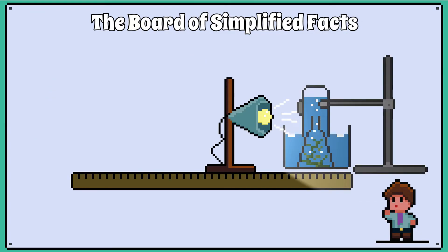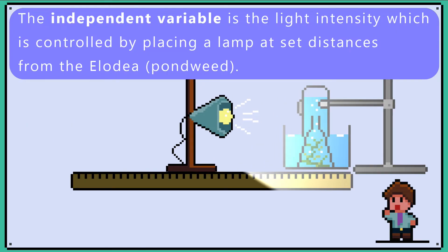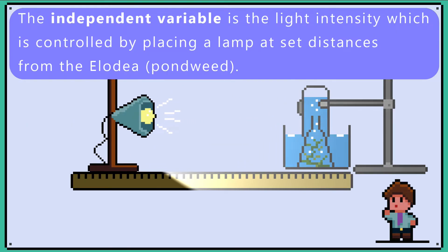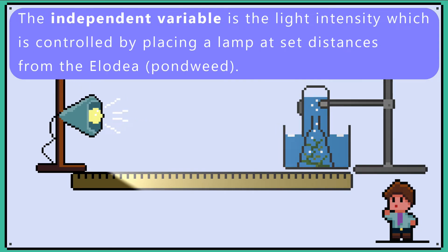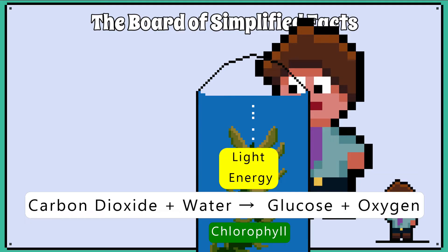The specified practical that you have done in the lab looks at light intensity and the rate of photosynthesis in pondweed. We will look at the variables, sources of error, and suggest improvements. The independent variable is the light intensity, which is controlled by placing a lamp at set distances from the pondweed. The dependent variable is counting the number of bubbles produced per minute, which reflects the rate of photosynthesis. The bubbles contain oxygen because oxygen is a byproduct of photosynthesis — more bubbles equals a higher rate of photosynthesis.